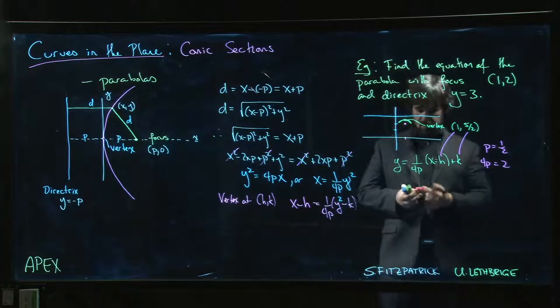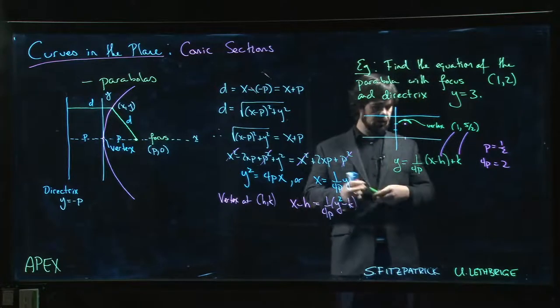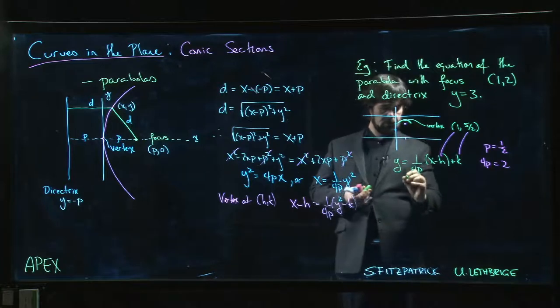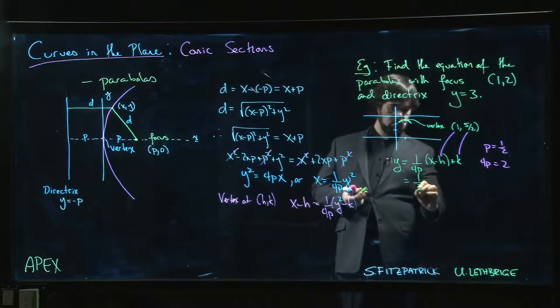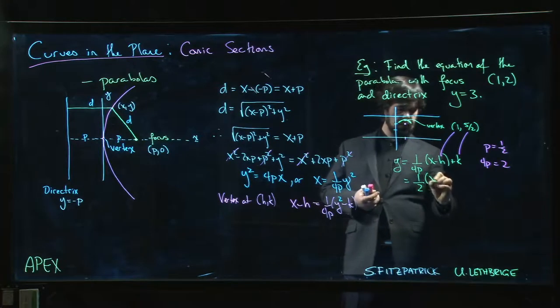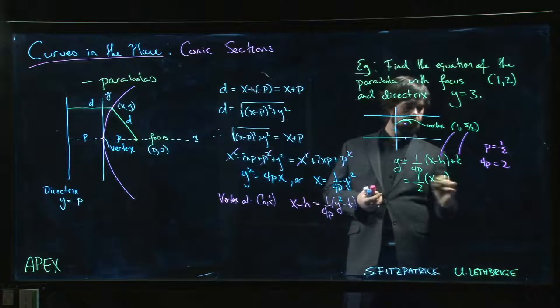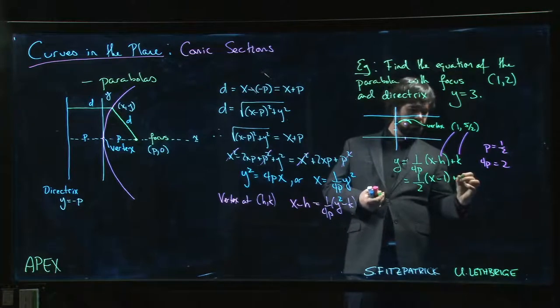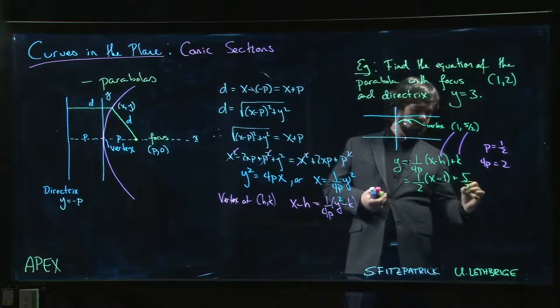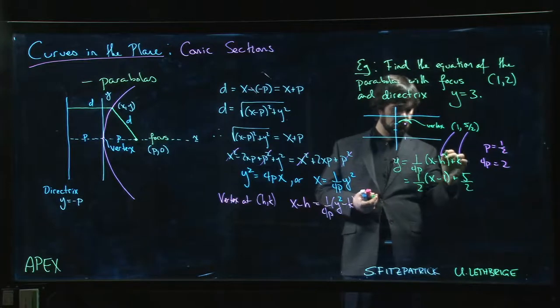So that means we get the following equation: y is equal to 1 half of (x minus 1) squared plus 5 over 2. Oh sorry, squared - I always forget the square.